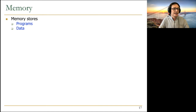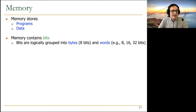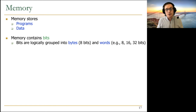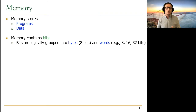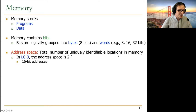Memory is used for storing the programs we want to carry out, and also the data needed by those programs. Memory contains bits logically grouped into bytes — eight bits. Words can be 8, 16, or 32 bits depending on the ISA's definition. The address space is the total number of uniquely identifiable locations in memory. In LC3 the address space is 2 to the 16; in MIPS it's 2 to the 32; in x86-64 the address space is up to 2 to the 48.